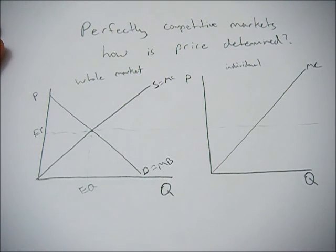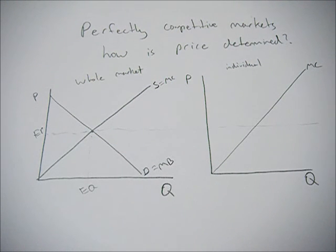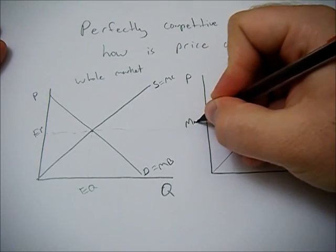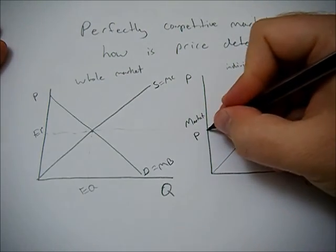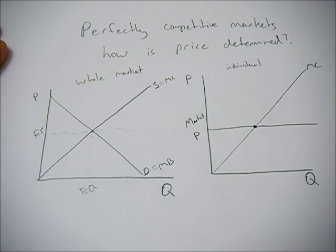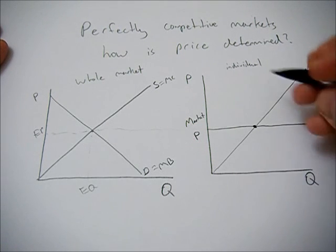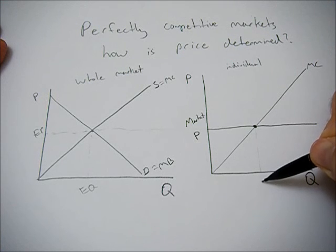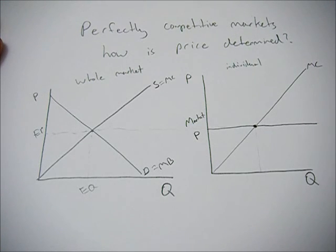So this is market price, and that ends up being the price that the individual firm has to take. If they decide to sell where price equals marginal cost, this will be the quantity supplied for that individual firm.